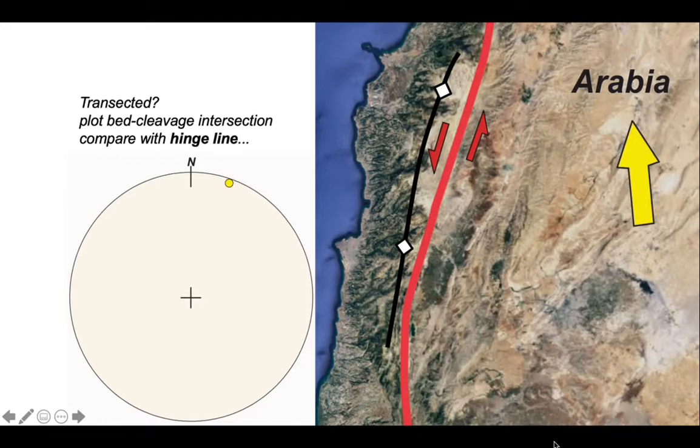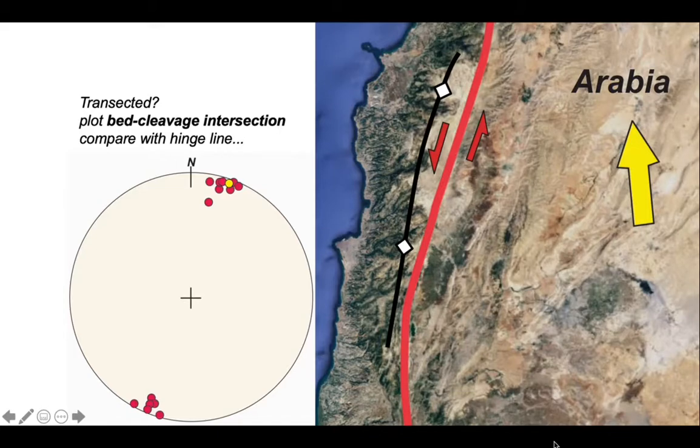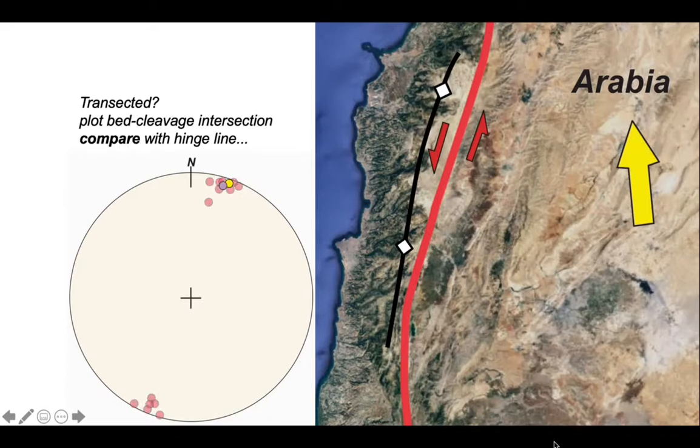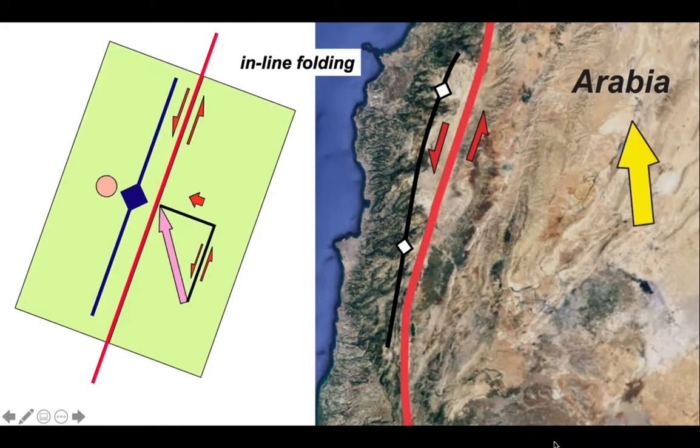This is the orientation of the hinge line, trending north-northeast, south-southwest, and is effectively horizontally plunging. Let's now plot on the measurements of the bedding-cleavage intersection measured on a transect across this fold. These form a cluster that trends north-northeast, south-southwest. We can compare the hinge line with this bedding-cleavage intersection and they plot on top of each other. So is this fold transected? No, it isn't.